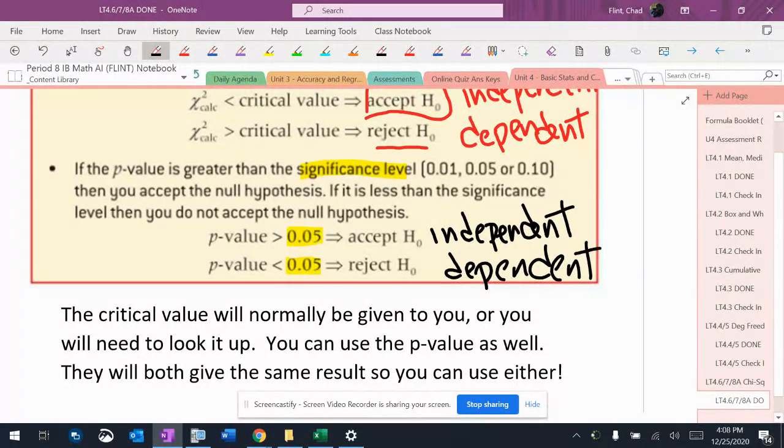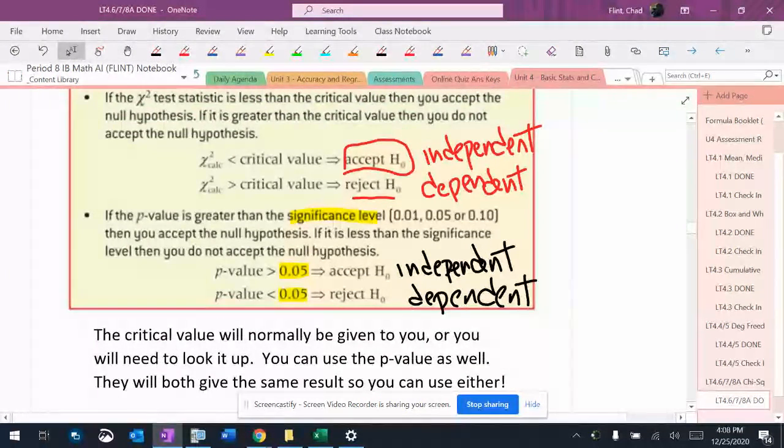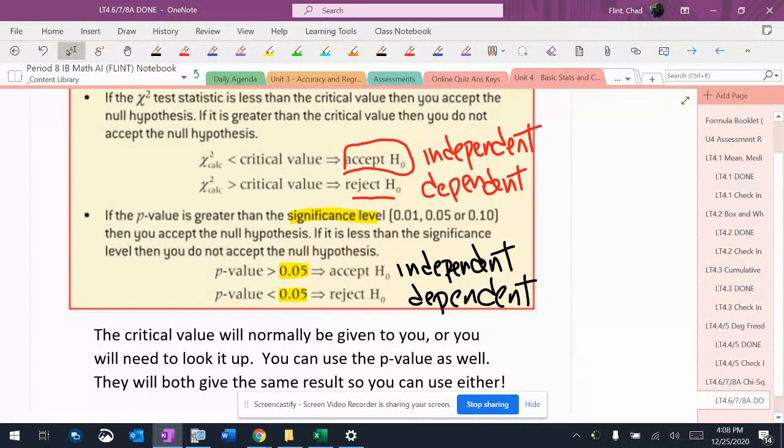Here's the problem with this, and I always struggle with this. These are opposites of each other. If the chi-squared value is under the critical value, you accept. But if the p-value is over the significance level, you accept. So it's very important to make sure that you remember they're opposite each other.